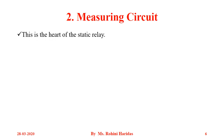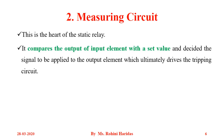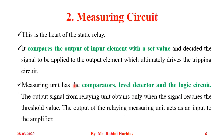Next is the measuring circuit. This is the heart of the static relay. It compares the output of the input element with the set value and decides the signal to be applied to the output element, which ultimately drives the tripping circuit. The measuring unit has comparators, level detectors and logic circuits. The output signal from the relaying unit is obtained only when the signal reaches the threshold value.